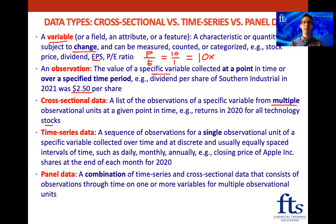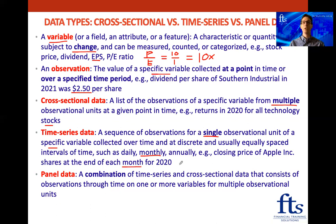That is cross-sectional data because we're comparing the returns of those shares over a specific year. Time series data, on the other hand, is a sequence of observations for a single observational unit of a specific variable collected over time at usually equally spaced intervals. For example, looking at the closing price of Apple shares at the end of each month for 2020 — that's time series data because it's only for a single unit, Apple.